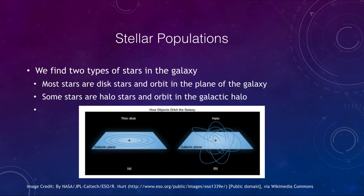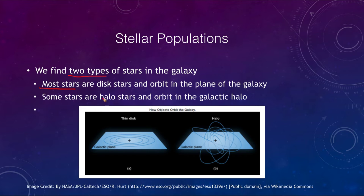What we find with stellar populations is that there are essentially two types of stars in the galaxy. Most stars that we see are what we call disk stars, meaning that they are in the disk of the galaxy.